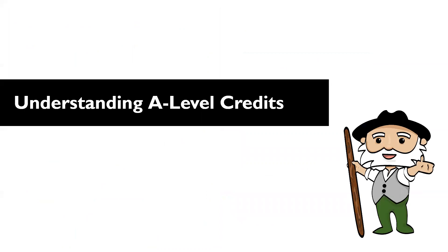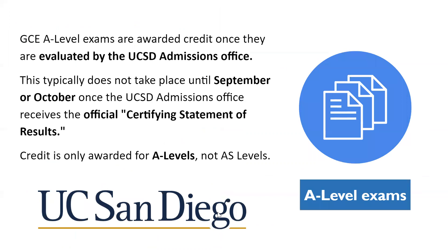Let's move on to understanding more about A-level credits. Unlike AP or IB, there's no A-level chart because A-level exams are more complicated. Your A-level exam must be deemed UC transferable in order for you to gain any credit for it. If you took A-level exams, make sure your official certifying statements of results are sent directly to UC San Diego Admissions — that's the office who determines whether your exams are UC transferable and whether credits will be granted. Evaluation can take some time, and only full A-level exams are given credit. If you have questions about UC transferability for A-level exams, contact UC San Diego Admissions.